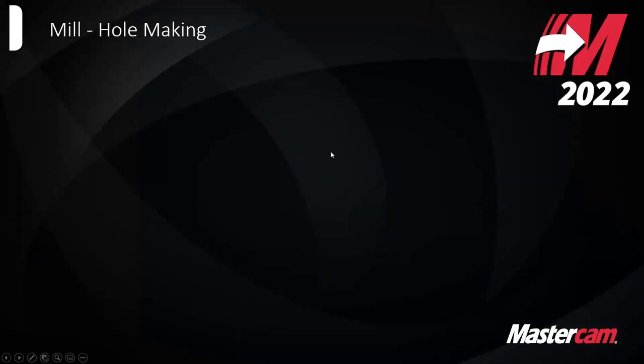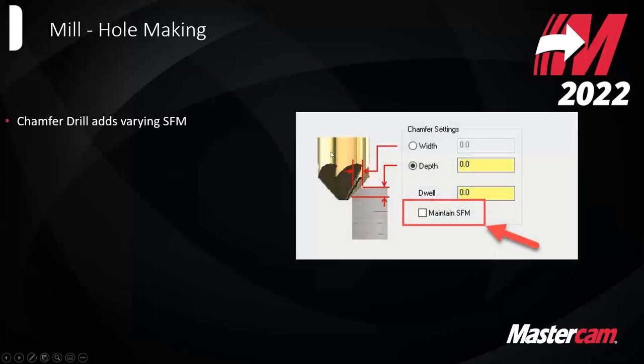Now getting into tool pathing enhancements, starting with hole making in mill. We've added an SFM control to chamfer drill. When we added the automatic chamfer drill a version or two ago, people reported the tool path would error out exceeding spindle RPM, or it wasn't matching up because you might be using the same chamfer drill on varying hole sizes. This is a small quality of life improvement to make sure your speeds and feeds are correct.